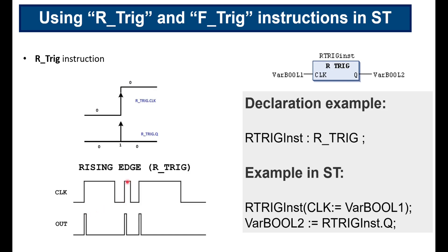Another rising edge happens and we have another pulse, and finally a third rising edge with a corresponding short pulse. To use this instruction in PLC programming we need to declare an instance of it. R_TRIG_inst is an instance of the R_TRIG instruction. In structured text it is used with the instance name, then in parentheses the input variable — denoted as clock in this case — and we access the output variable with the notation R_TRIG_instance.Q.